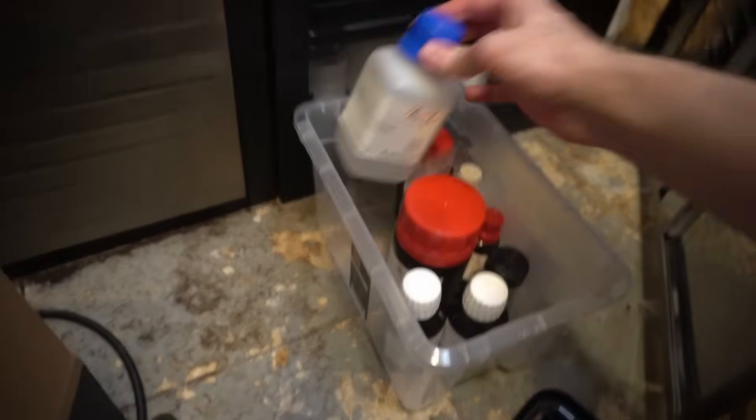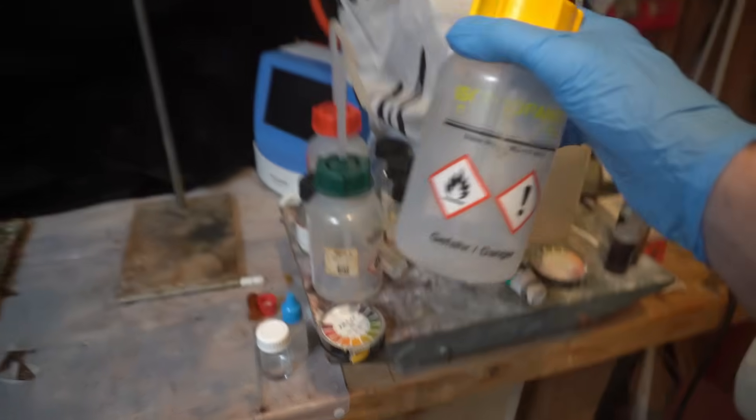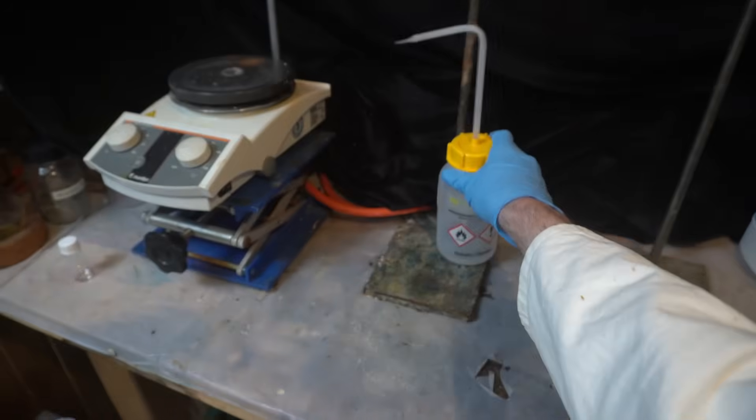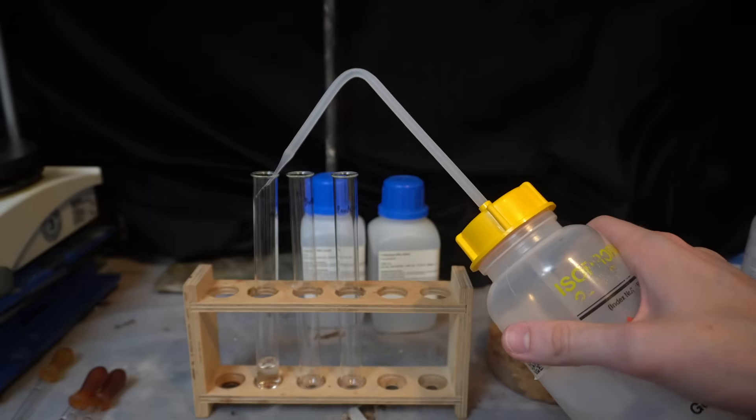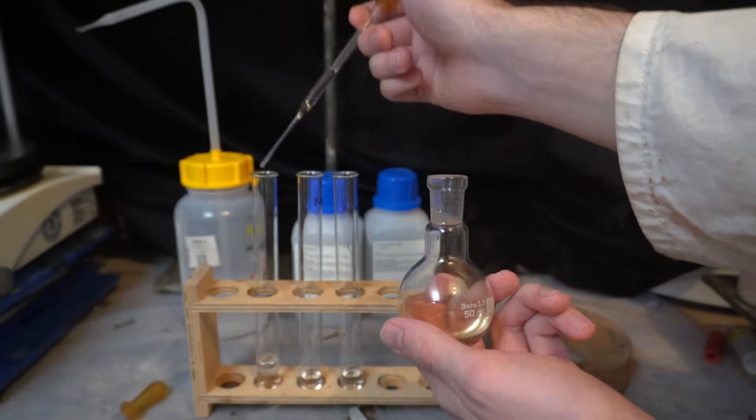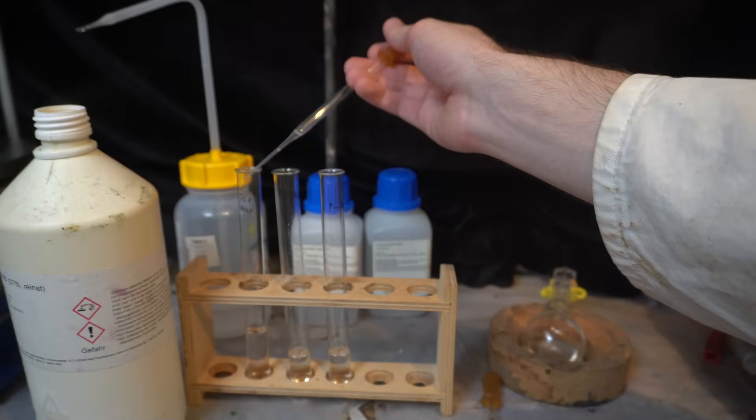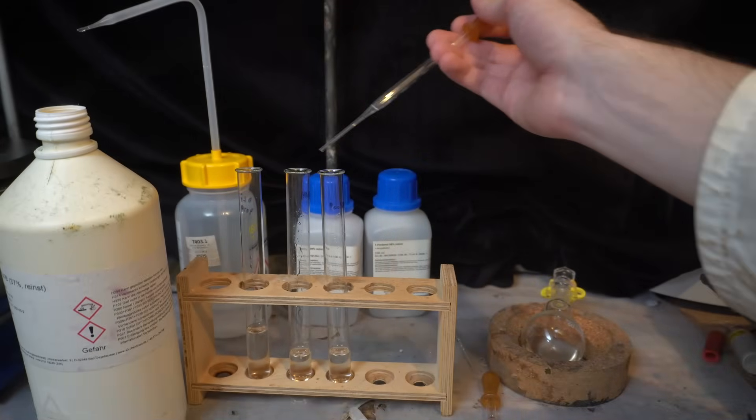So instead, I'm gonna use them to make a few esters with some random alcohols I have in the lab. While searching through my storage cabinets, I found some 1-pentanol and 1-butanol, and on my workbench is a squirt bottle with isopropanol. For this demonstration, I don't really care about stoichiometry, so I'm gonna add roughly equal parts of anhydride and alcohol to each test tube, and then a small drop of hydrochloric acid as a catalyst.